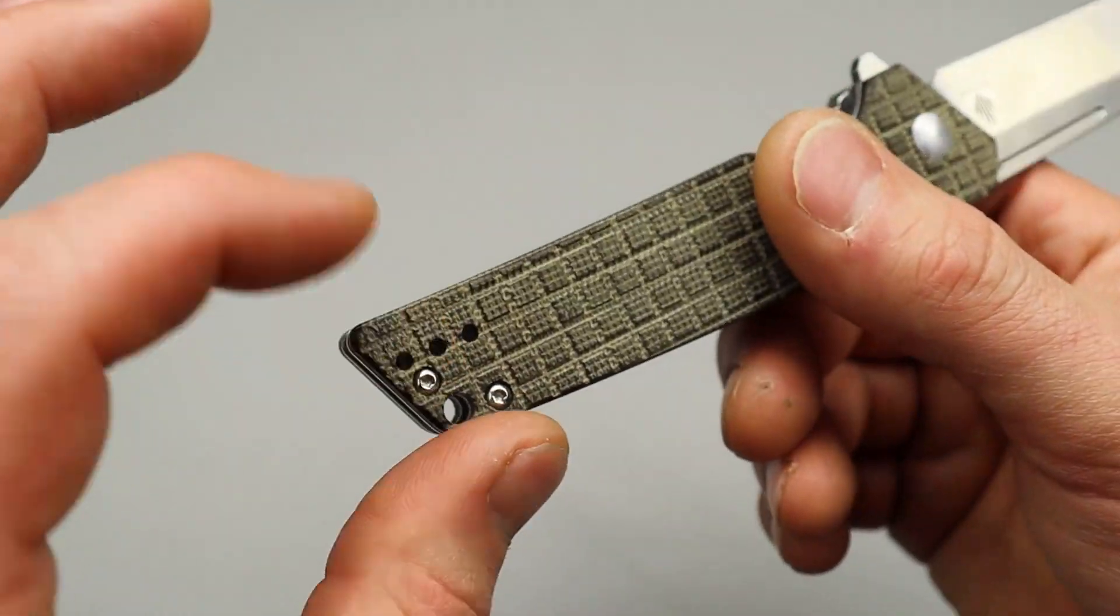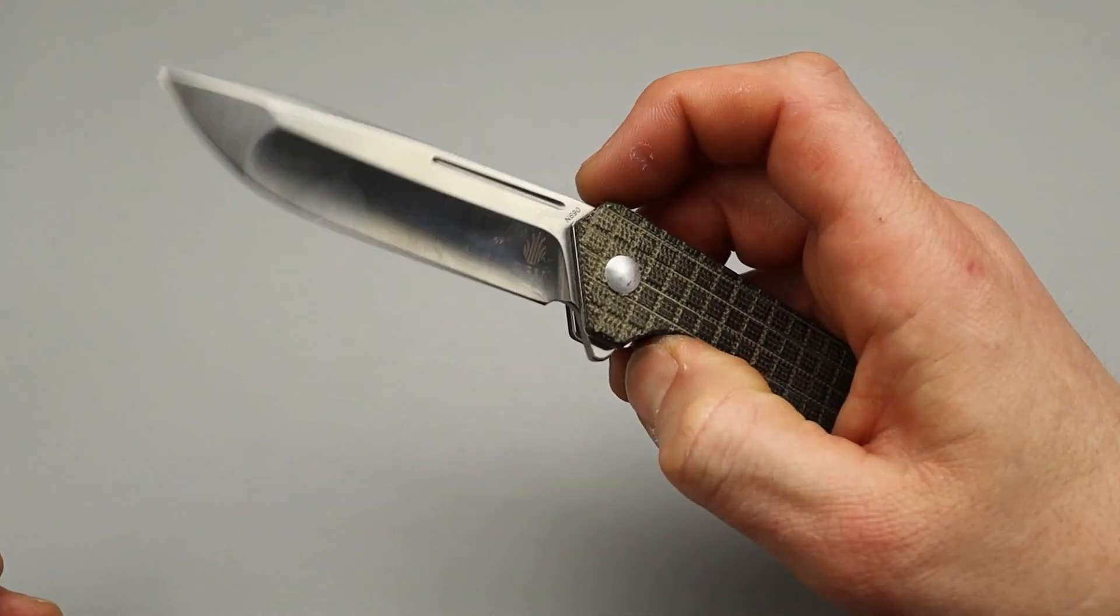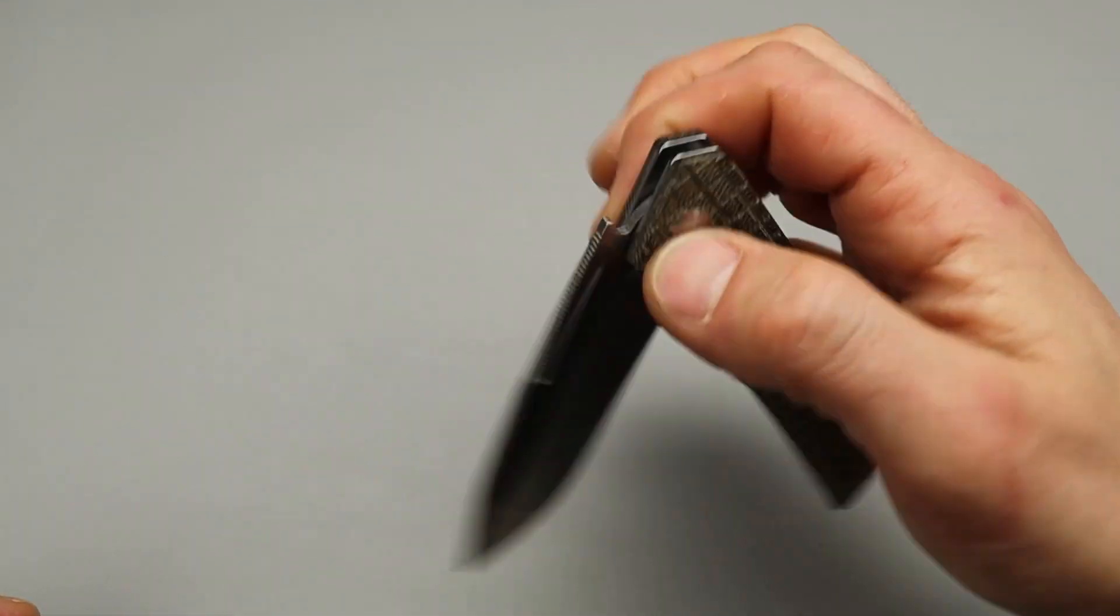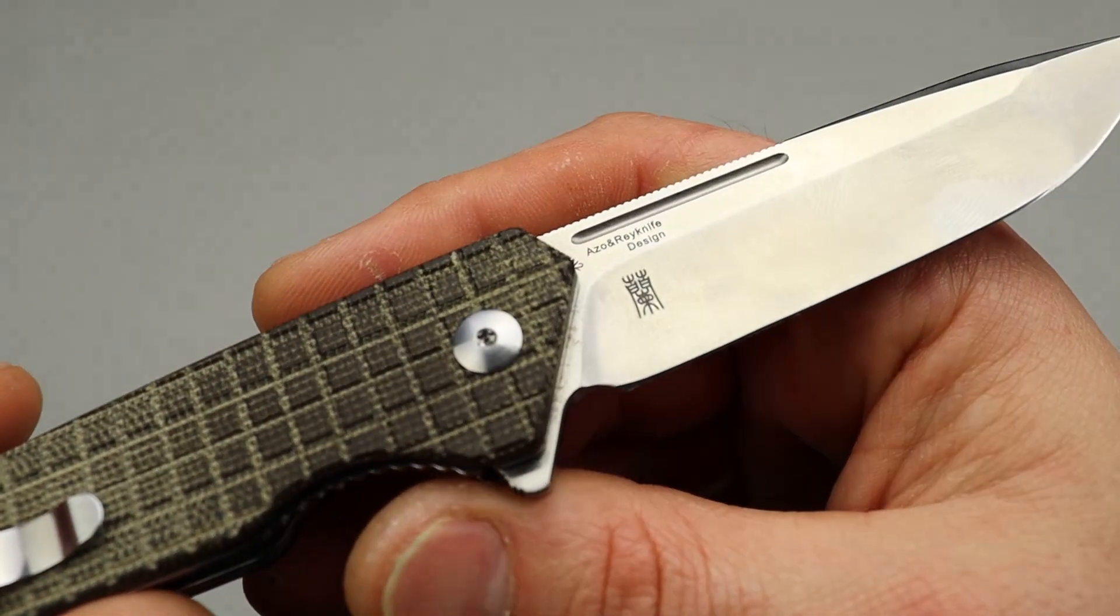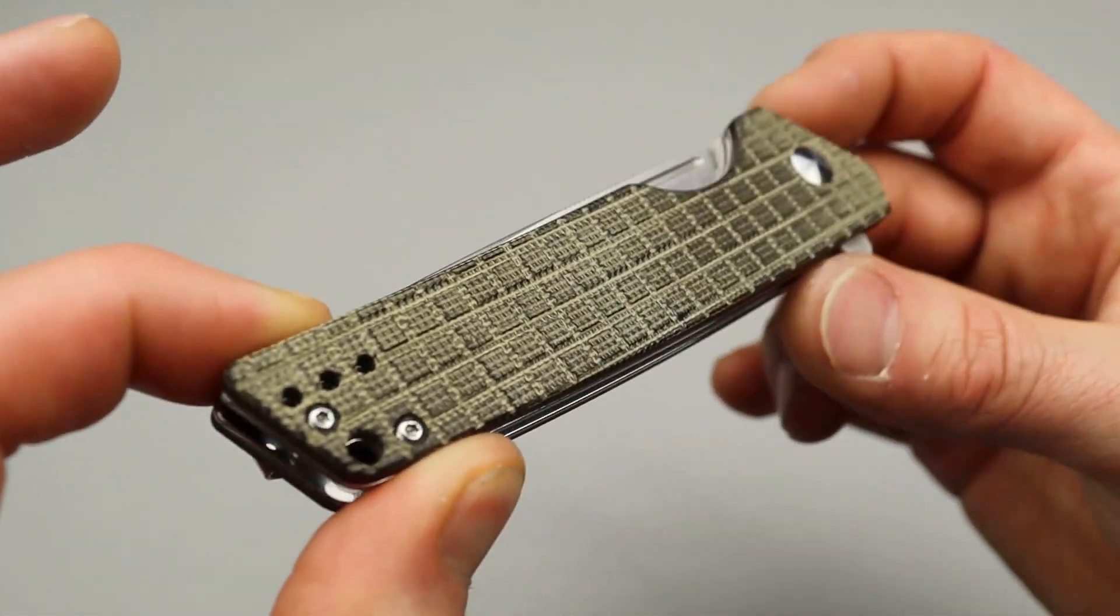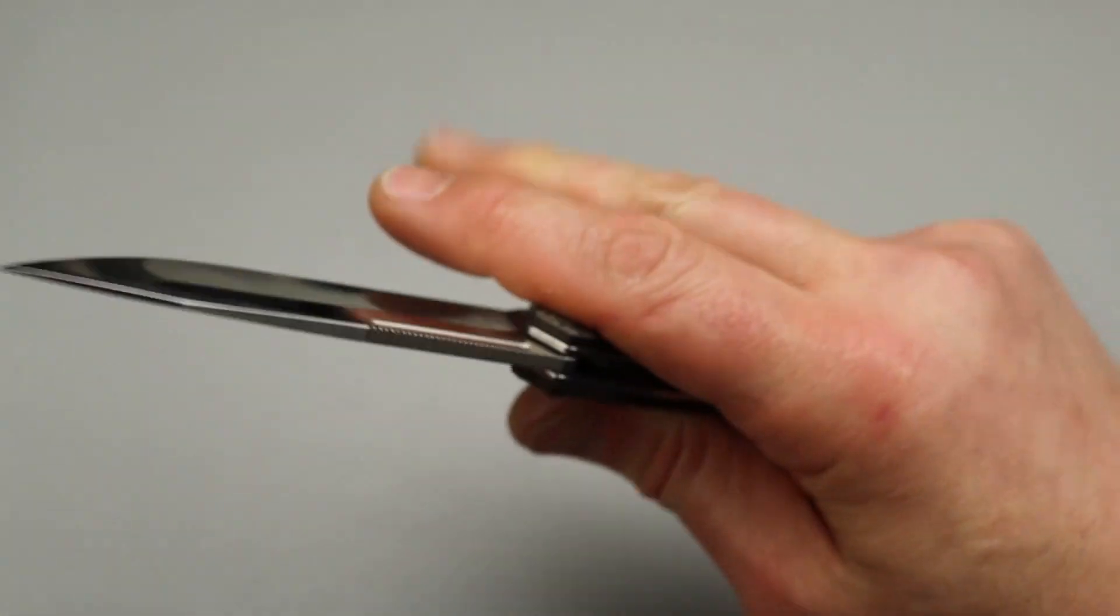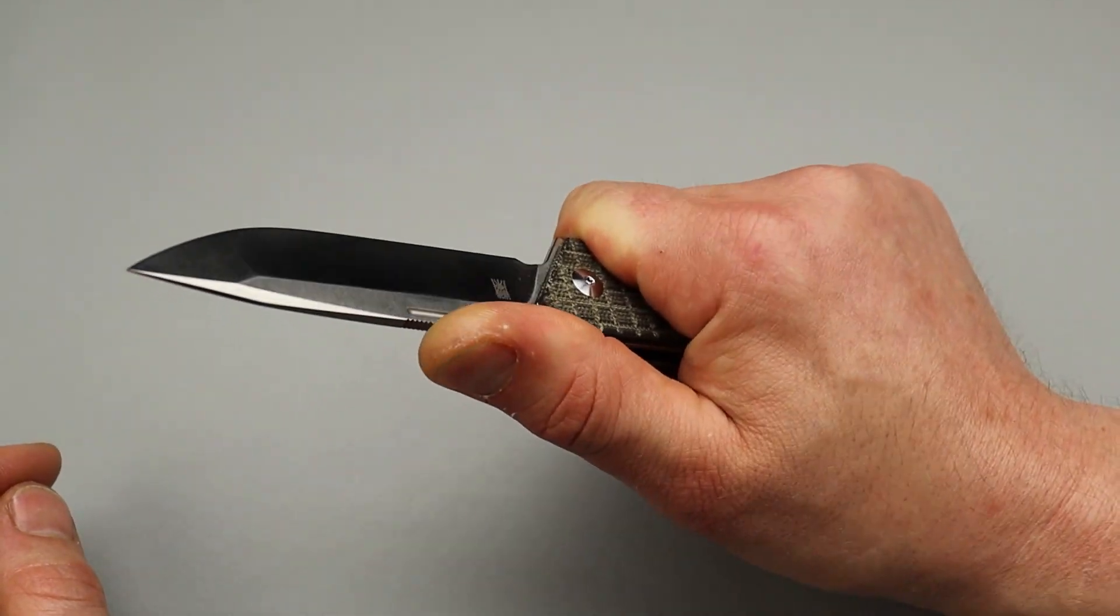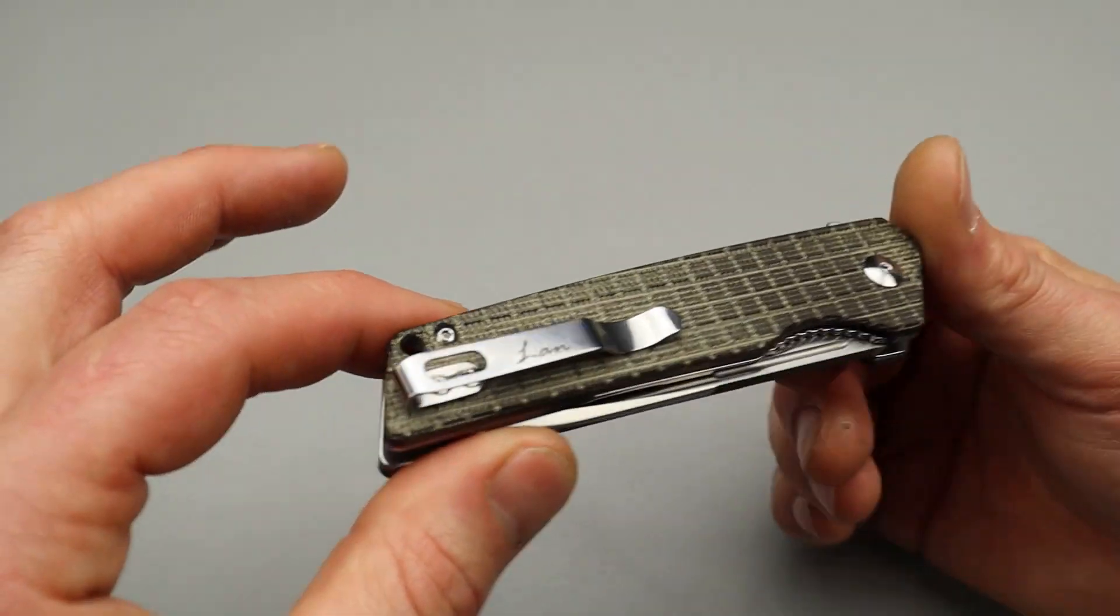Nice and thin behind the edge right here. We have frag patterned micarta scales. Deep carry clip that is adjustable on both sides. And, it is complete fall shut action. This has an amazing detent. You can also reverse flick it. Very snappy. The blade steel is N690. The access to the lock bar is really good. The blade seats nice and tight inside the handle. But the Kaiser Lan.